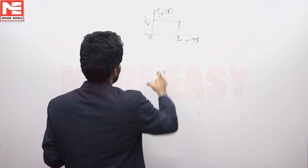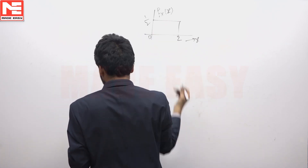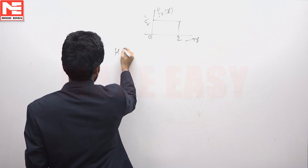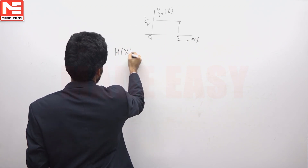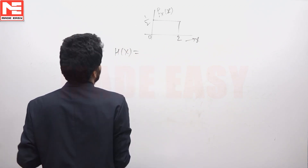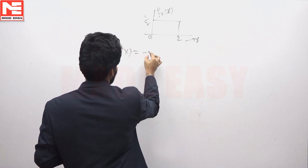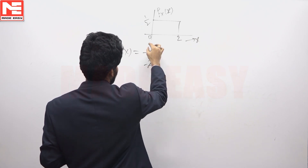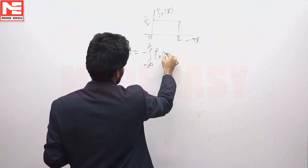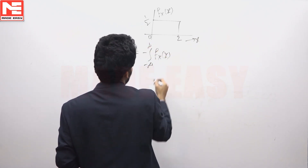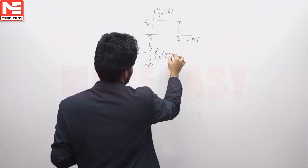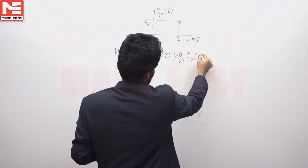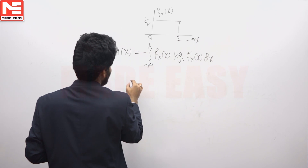The density function of a random variable is given and we have to find the differential entropy h(x) of this random variable x. So this is: h(x) = minus the integration from minus infinity to infinity of f(x) log base 2 of f(x) dx.